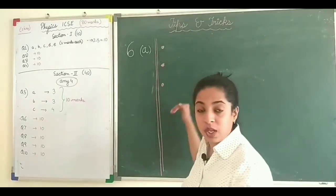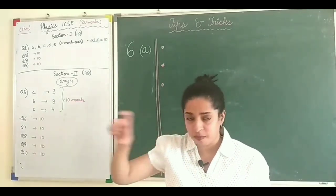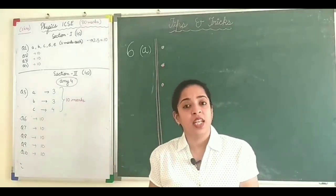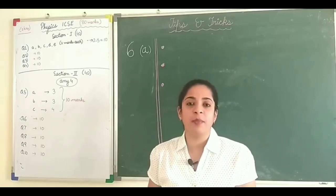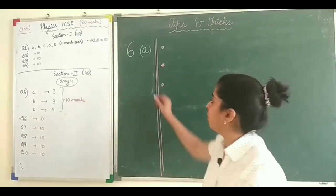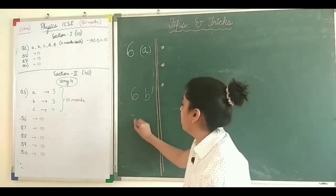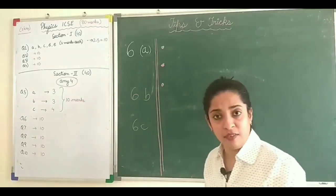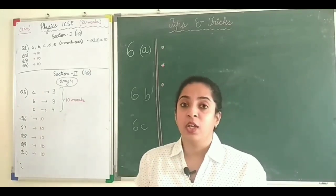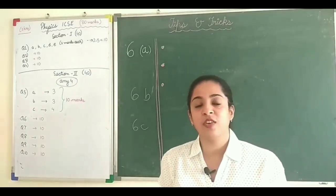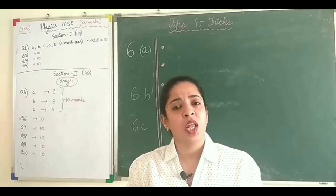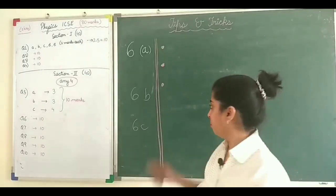And leave line after each section of the question. Suppose six A is divided into three parts. You will not write it in paragraph. For one part you will write the answer, leave two lines, then write second part, leave two lines and then write. Leave more lines so that the examiner can differentiate between three different points. Leave as many lines as possible, even after each question. For example six A, six B, six C. So after six A you can leave few lines, after six B leave four five lines, after six C leave four five lines. Because in the end you might need to add something. When you are checking you realize something is wrong, you can write something at the back below it. So leave four five lines after each and every question.